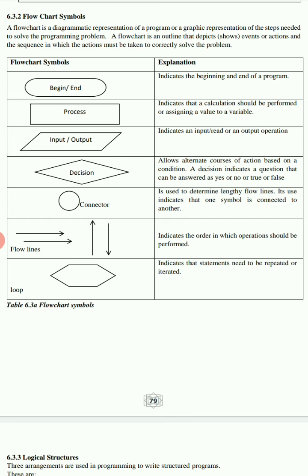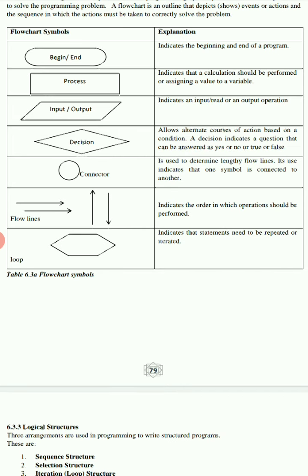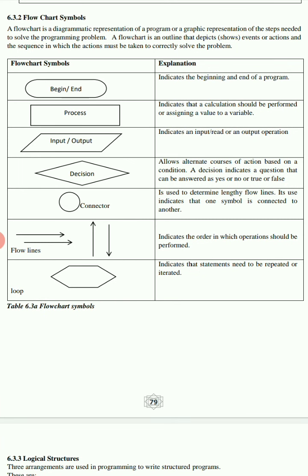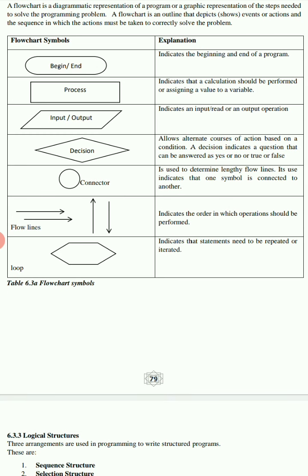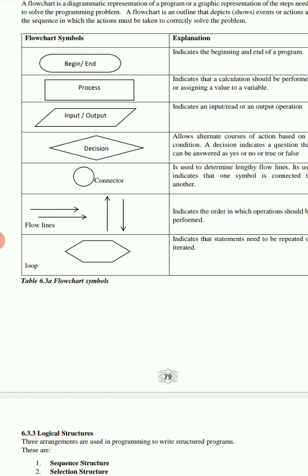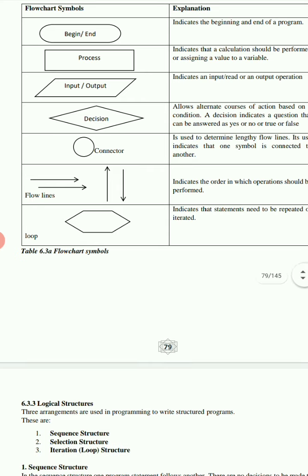The next symbol is process - the rectangle symbol. This is used when calculations need to be performed or when you are assigning a value. The process symbol basically tells you that the computer is doing all the processing or calculations. So once you draw a rectangle, that tells you the computer is going to do this calculation - not the user, but the computer or the program you're designing.